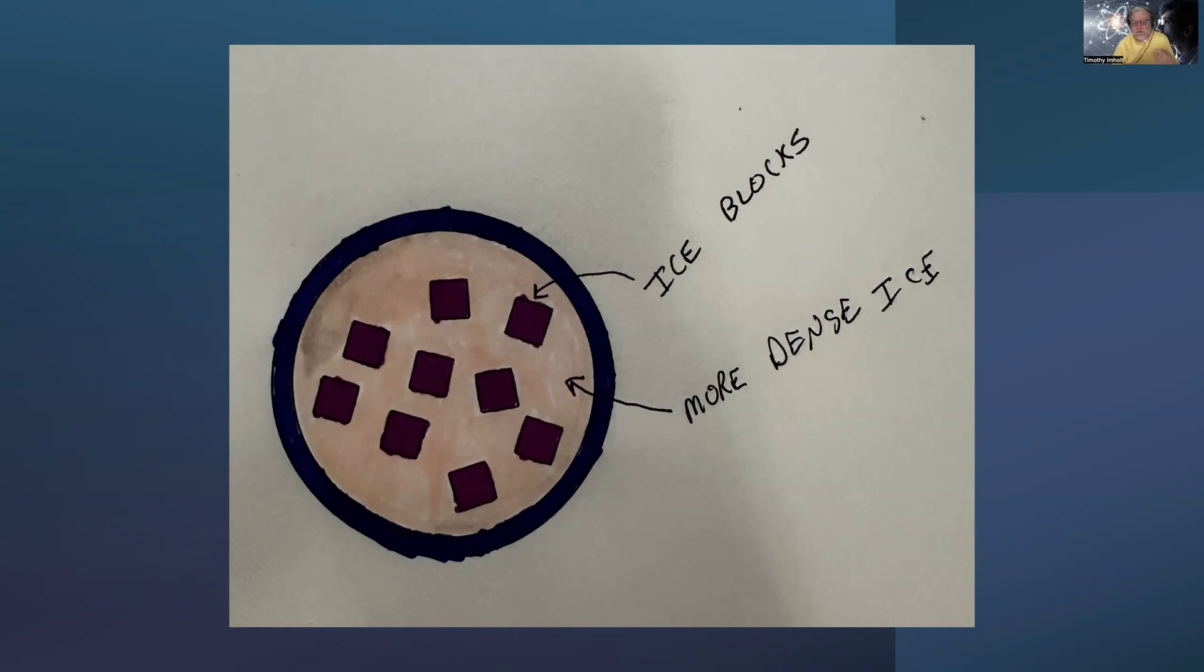So what you'll wind up with is something that is still ice—it is still water ice—but it's different types of water ice. Some is the type you get out of your freezer; some is more dense than that; some is even more dense than that. It just kind of will vary depending on where you're at inside that container.